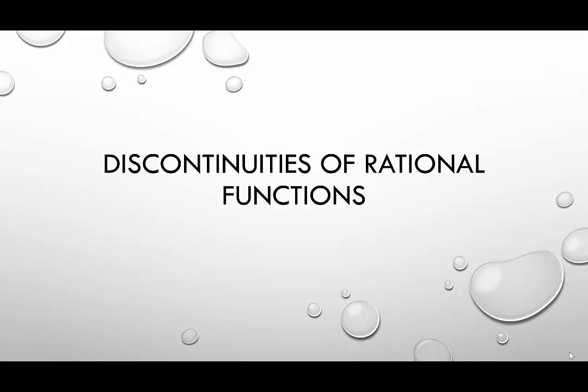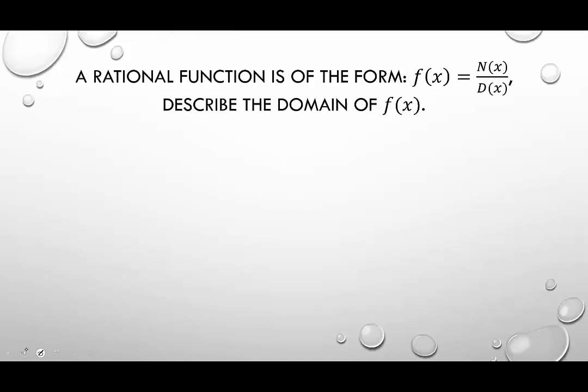Hello and welcome to helpyourmath.com. In this video we're going to look at the discontinuities of rational functions. Before we get to the discontinuities, let's describe a rational function. A rational function is of the form f of x equals n of x over d of x, where n of x and d of x are polynomial functions. Polynomial functions have all variables with positive integer exponents, so basically it's just a fraction of two polynomial functions.